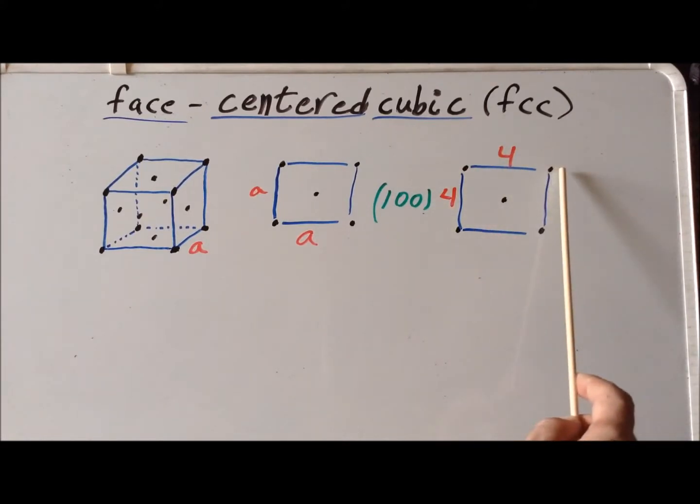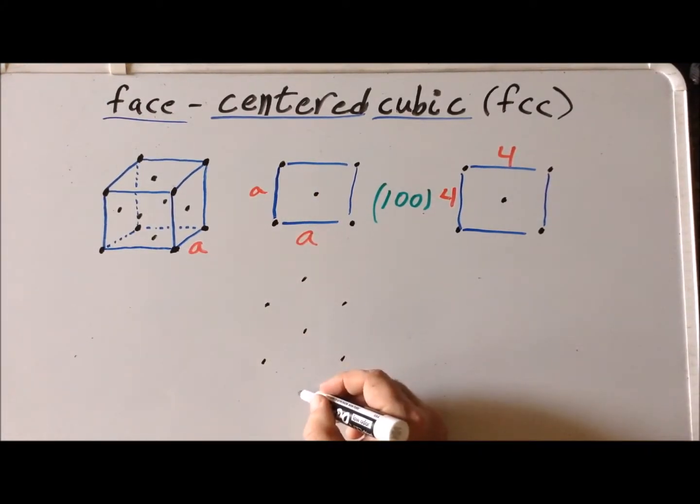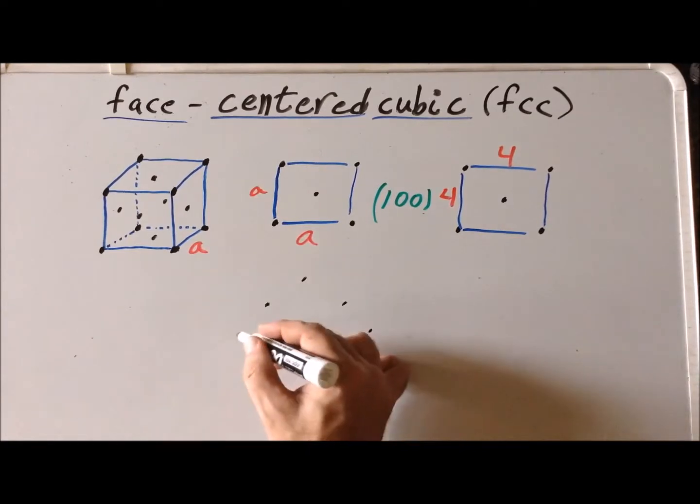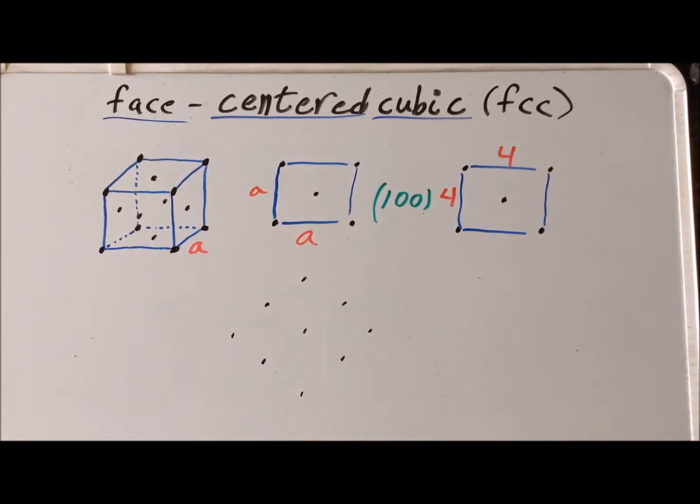So if these are separated by four studs, then this will be separated from this line by a distance of two studs. If we continue this lattice, we'd also have additional lattice points here, here, here, and here, which we add to show the following thing.